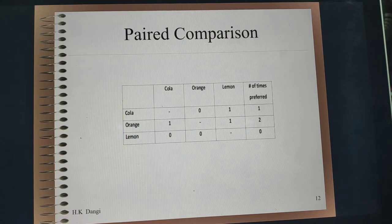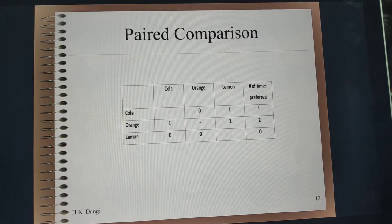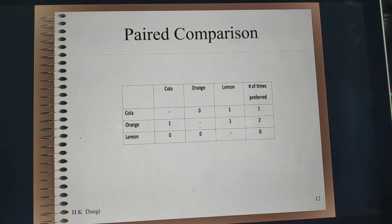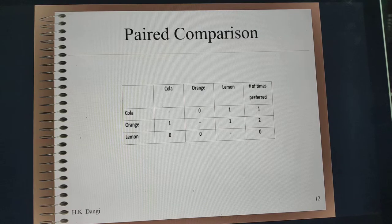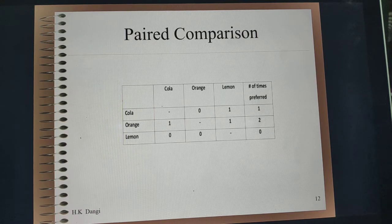The first comparative scaling technique is paired comparison. For example, there are three drinks — cola, orange, and lemon. If you prefer the drink in the row over the drink in the column, give one, otherwise zero. You count the number of ones scored by each object. In this example, orange has scored maximum, meaning orange is the most preferred, followed by cola, followed by lemon. If there are n objects, then n(n-1)/2 comparisons can be made.